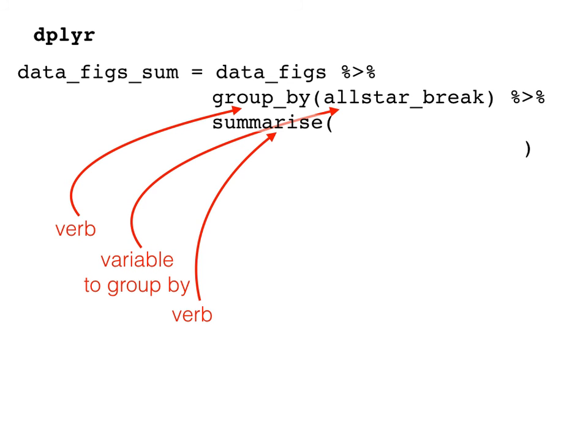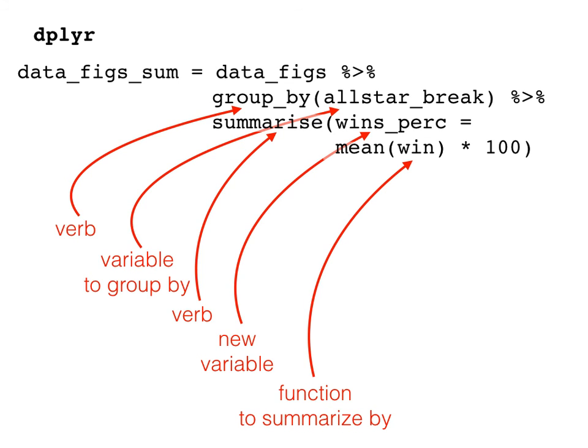Next, we have our second new verb, summarize. It's in the summarize call that we say what exactly we want R to do with our data. First, we create a new column for our summarized data. In our case, we call it wins_perc for percentage of wins. Then, we supply the function to summarize. Here, I want the mean of win, so I can get a proportion for how often the Giants won both before and after the all-star break. This is another reason why it's good to use ones and zeros for the dependent variable instead of words like win and loss. I've also chosen to multiply the mean by 100 to make the output look more like a classical percentage for our plot.